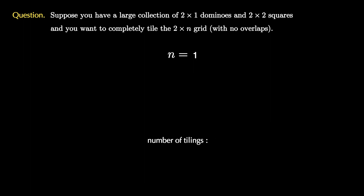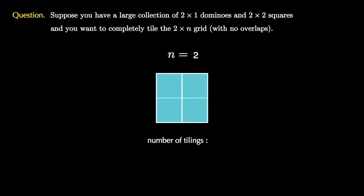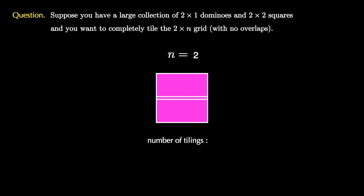When n equals 2, things get a bit more interesting. We can place the dominoes vertically, horizontally, or we can place one single square, so there are three total tilings.